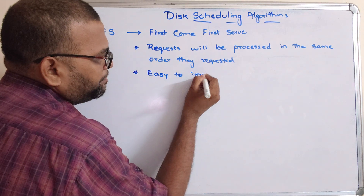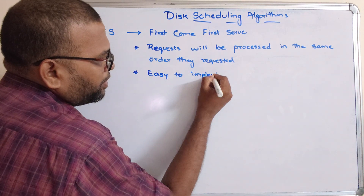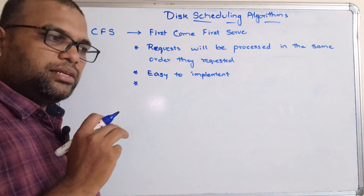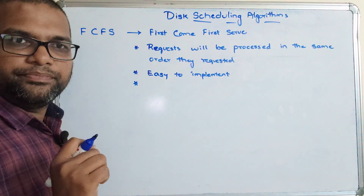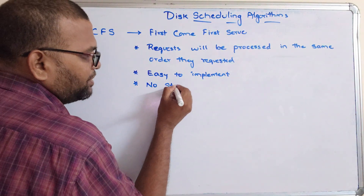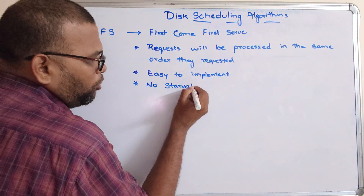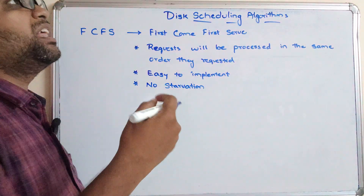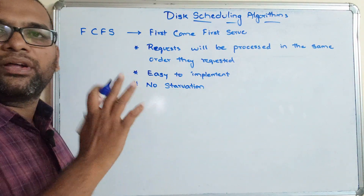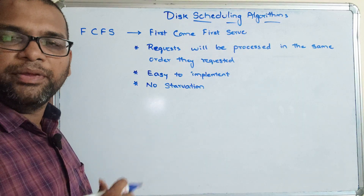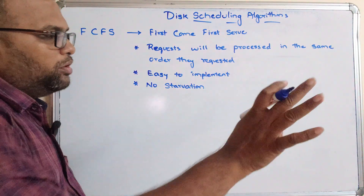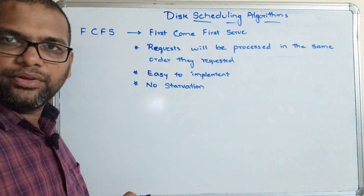One advantage of FCFS is that it is easy to implement. The second advantage is there will be no starvation, because requests are processed in the same order they arrive — no process has to wait indefinitely to complete its execution.